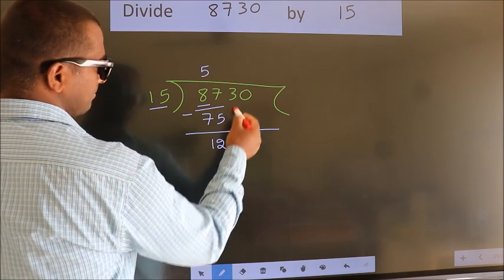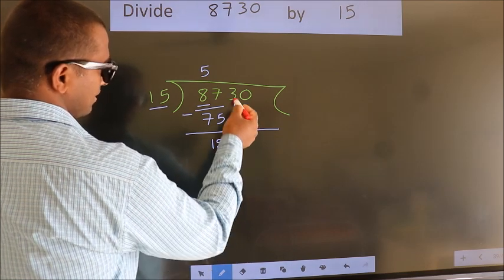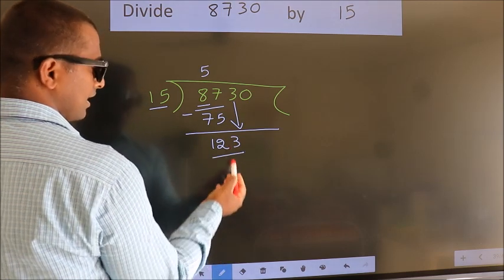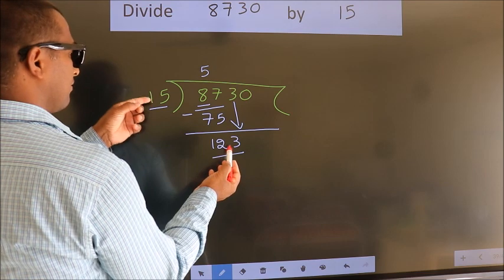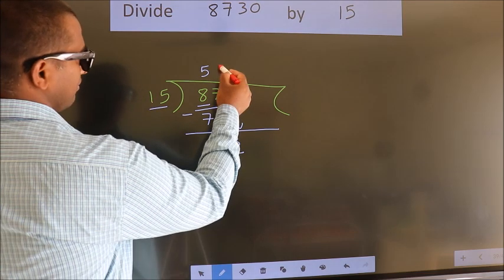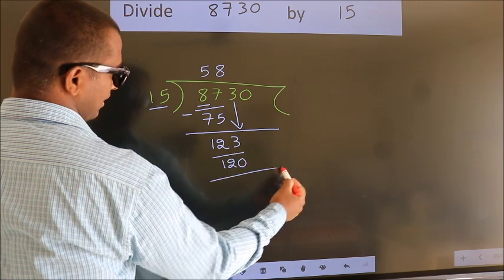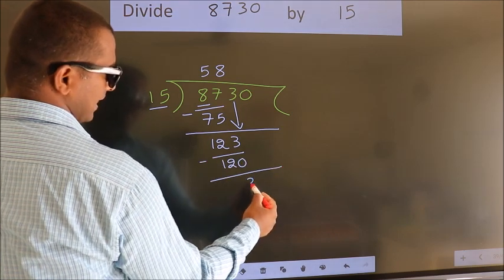After this, bring down the beside number. So, 3 down. So, 123. A number close to 123 in the 15 table is 15 eights, 120. Now we subtract. We get 3.